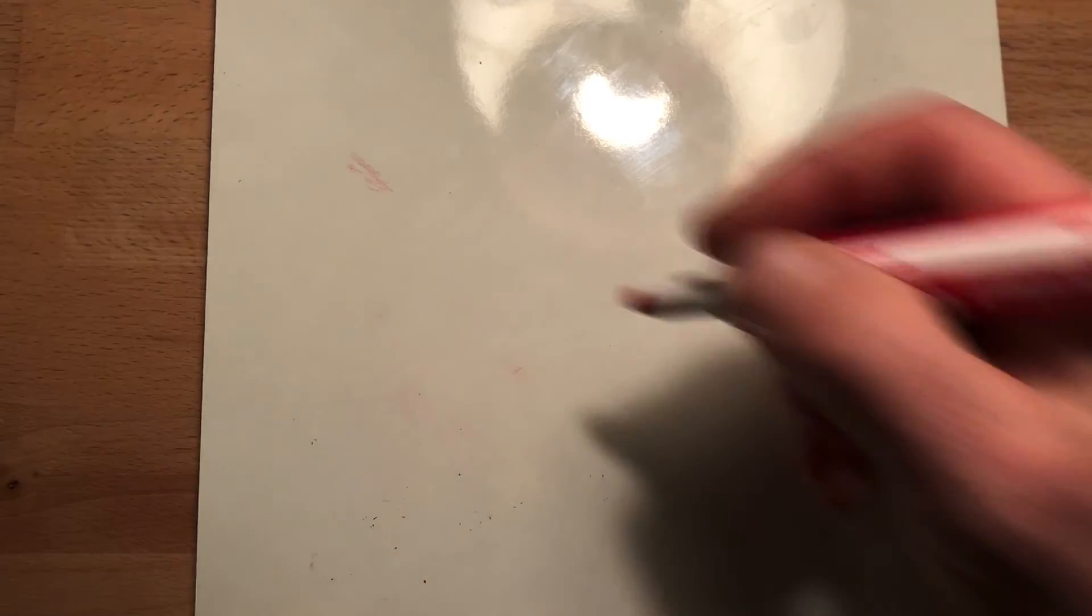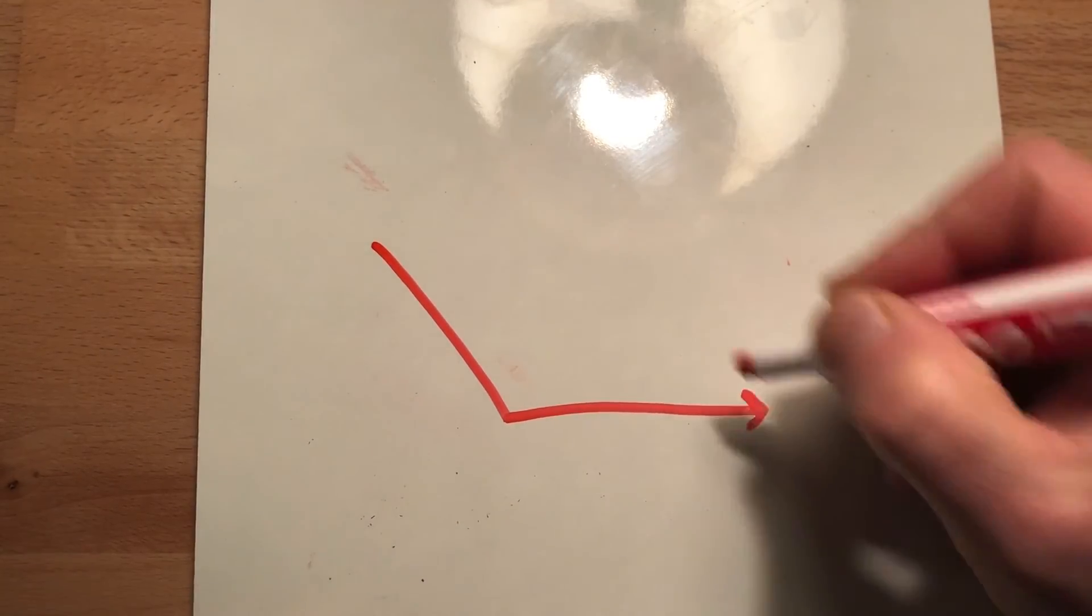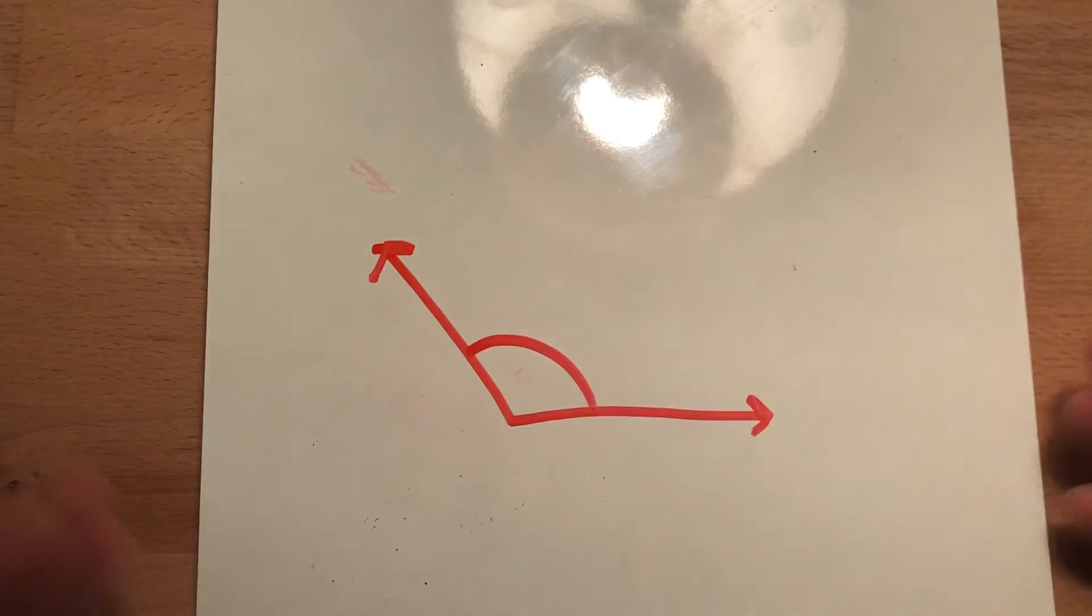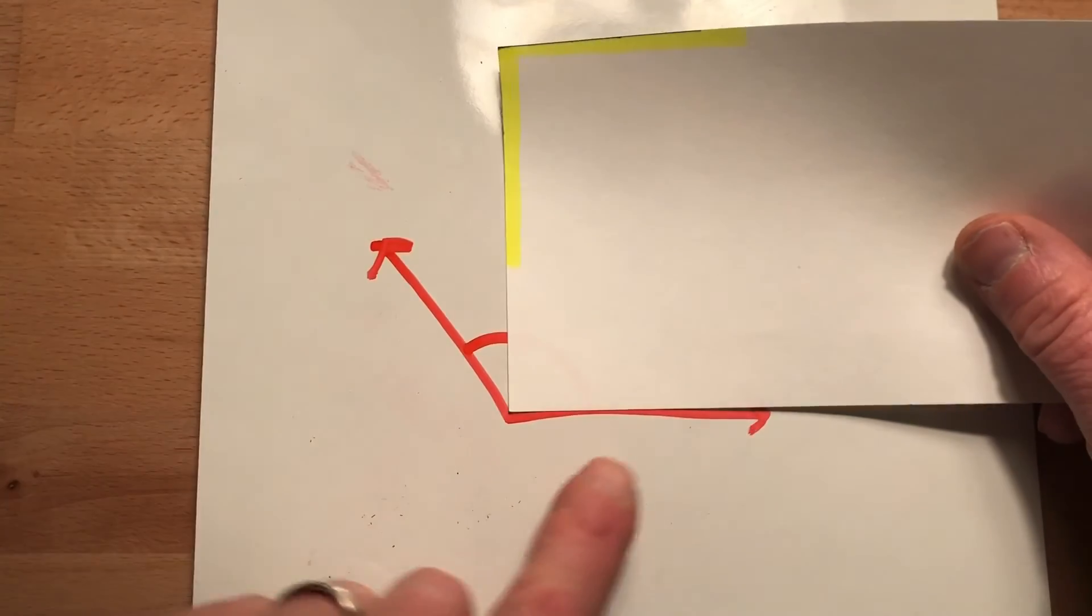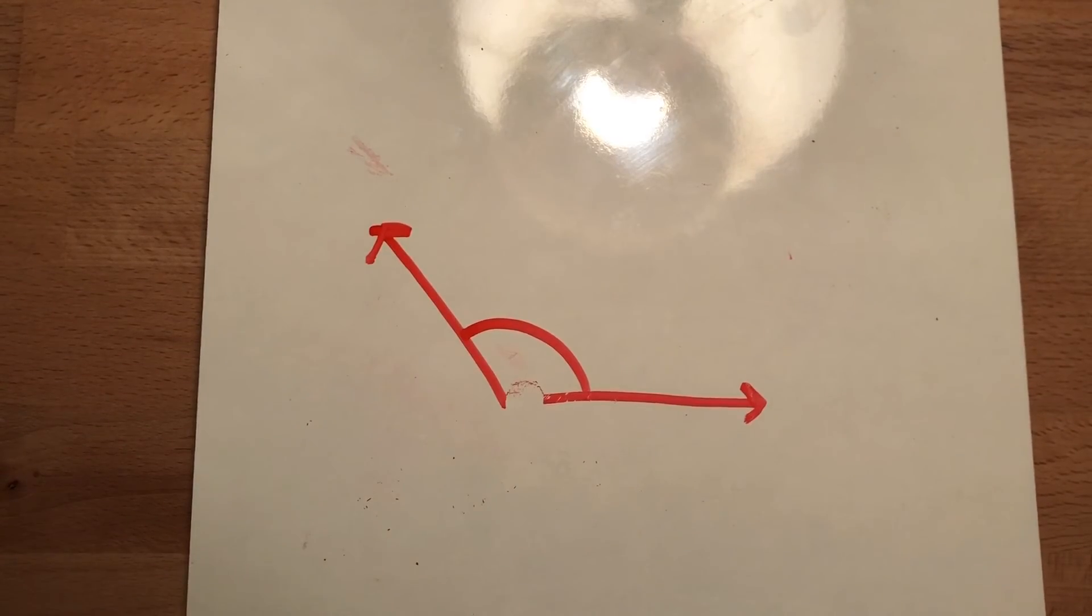So go ahead and draw an obtuse angle. Quickly, quickly. Draw an obtuse angle. And get ready. And show us. Hopefully you wrote down something that was similar to this. It's bigger than a right angle. If I use my right angle tool here, it goes past because it fades out from the right angle. That's an obtuse angle. Good job. Erase that.